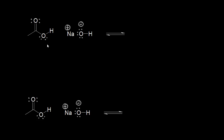Drawing acid-base reactions is a really important skill when you're doing organic chemistry mechanisms. So let's look at an acid-base reaction. On the left, acetic acid is going to function as our Bronsted-Lowry acid — it's going to be a proton donor. On the right, we have sodium hydroxide, and hydroxide is going to accept a proton. It is going to be a Bronsted-Lowry base.